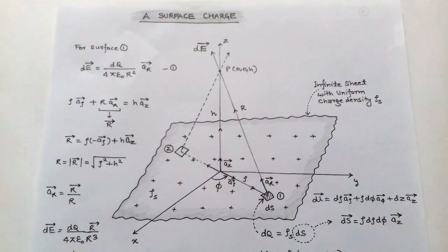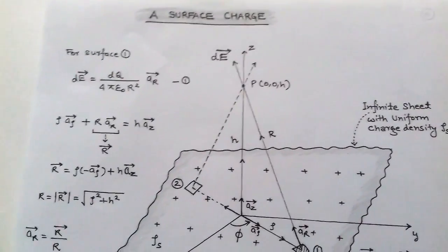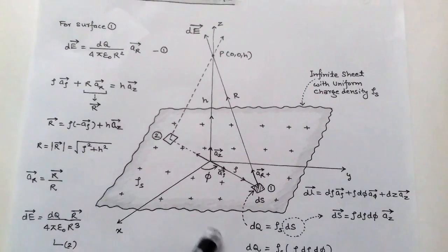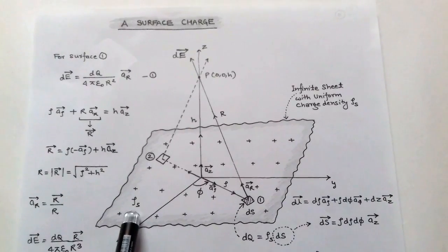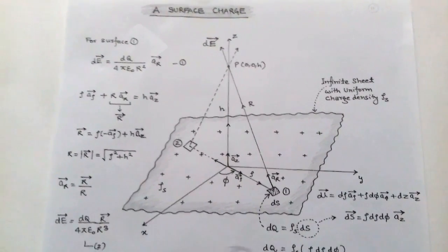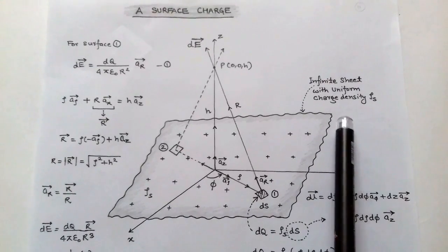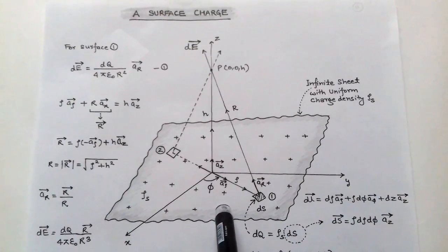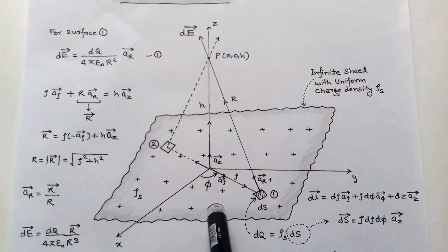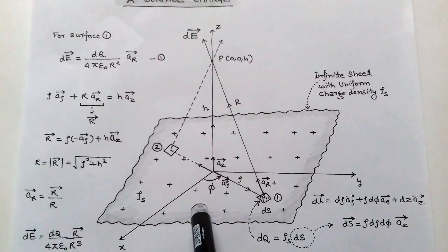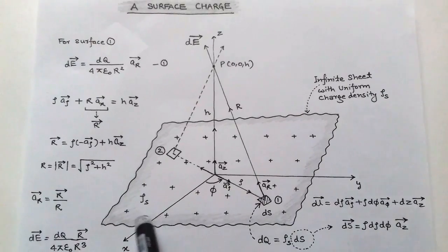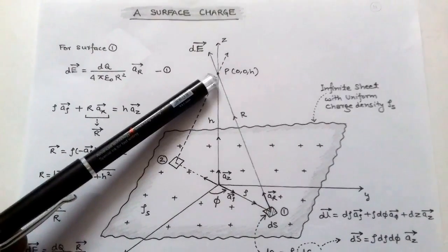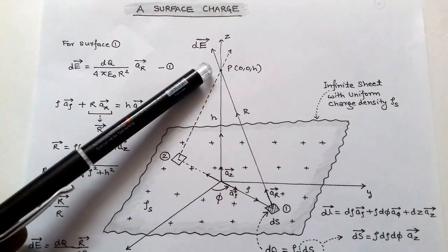Surface charge: we consider the xyz plane and on this plane we consider an infinite sheet with uniform surface charge density ρs. The positive charge is uniformly distributed with surface charge density ρs. Due to this infinite sheet, we have to determine the electric field intensity at point P, which is situated on the z-axis.